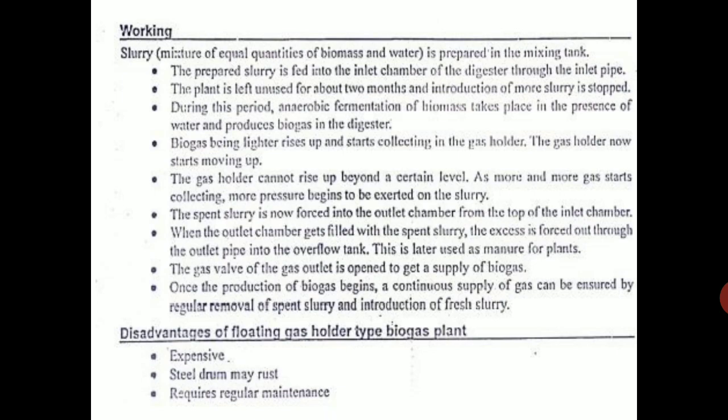Once the production of biogas begins, a continuous supply can be ensured by regular removal of spent slurry and introduction of fresh slurry — similarly to how we consume food and excrete daily. The disadvantage of this model is that it is slightly more expensive than the fixed dome type, and the steel drum is prone to rust and requires maintenance.